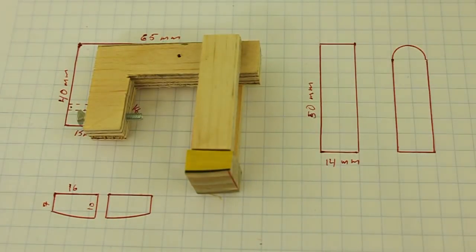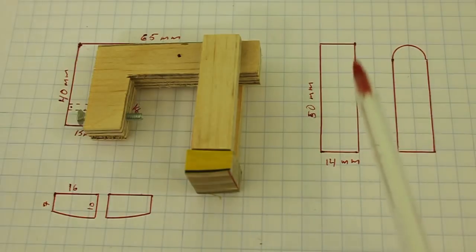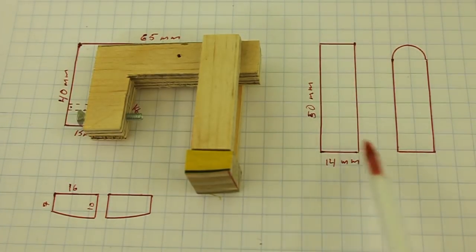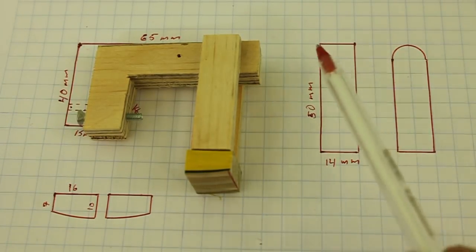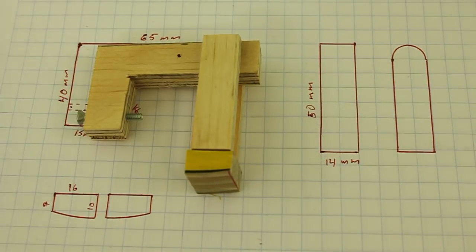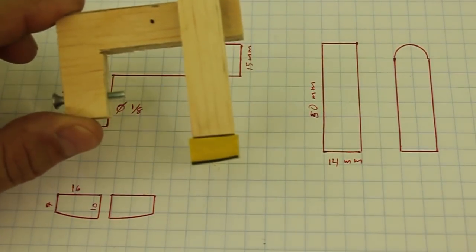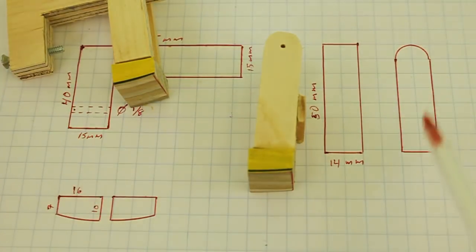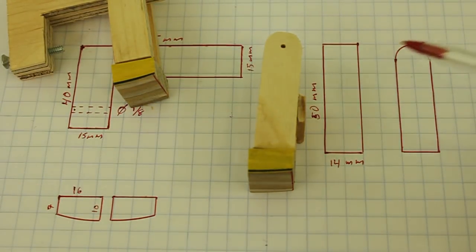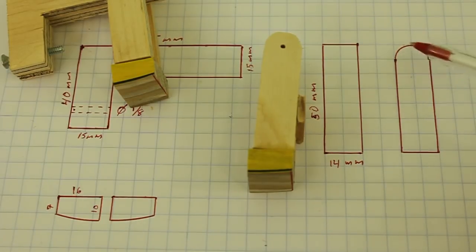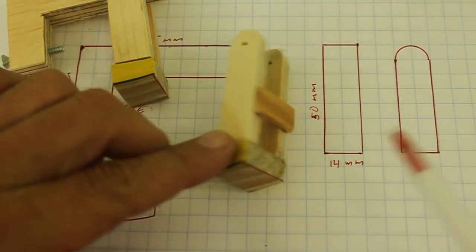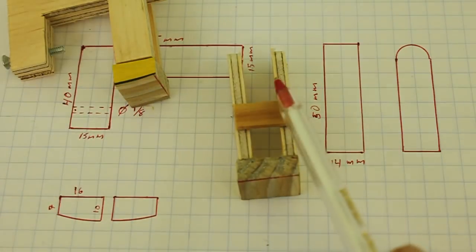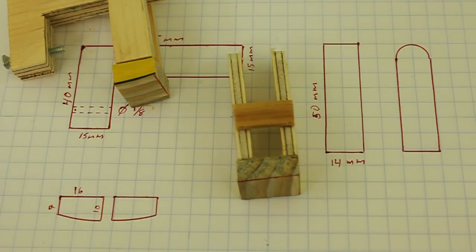We also need 4 legs. The front legs are this rectangle, 50 mm by 14 mm. These two. And the rear legs are of the same size, but this part of here is a semicircle. And they are made with wood of 5 mm in width.